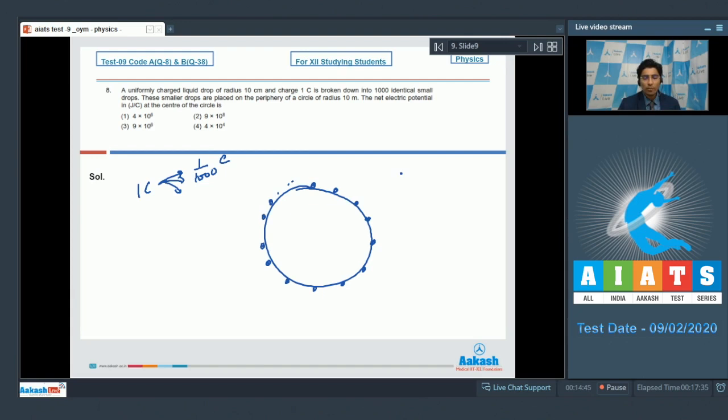The potential due to any drop can be written as KQ by R, which will be equal to K into 1 by 1000 coulomb divided by the radius of the circle which is 10. This will be equal to K into 10 to the power minus 4.